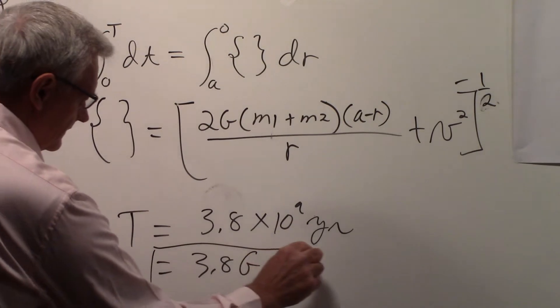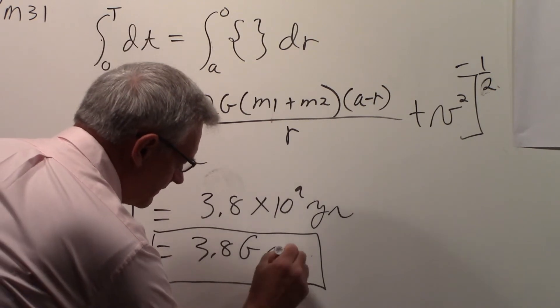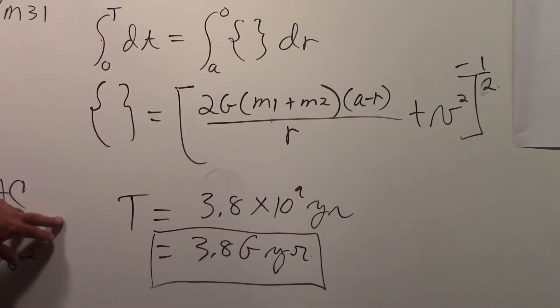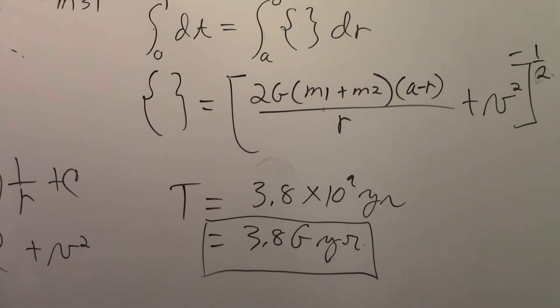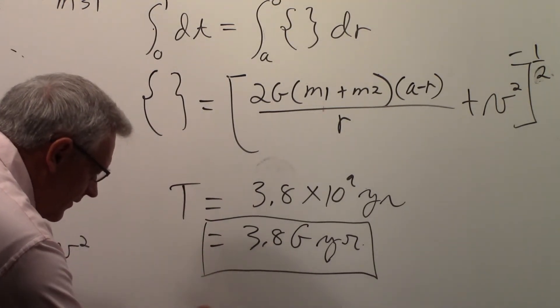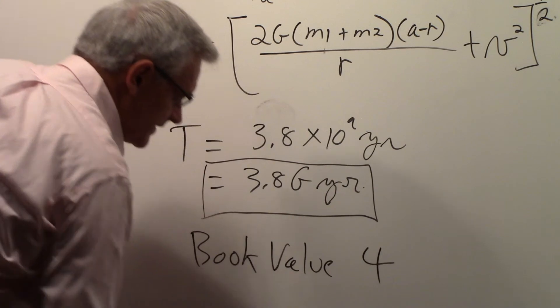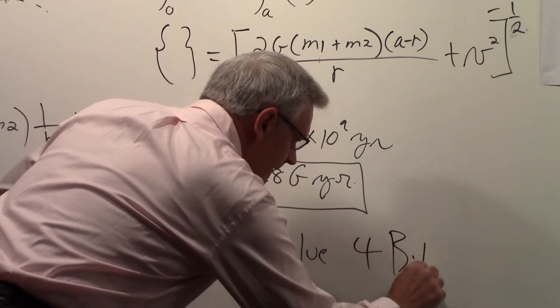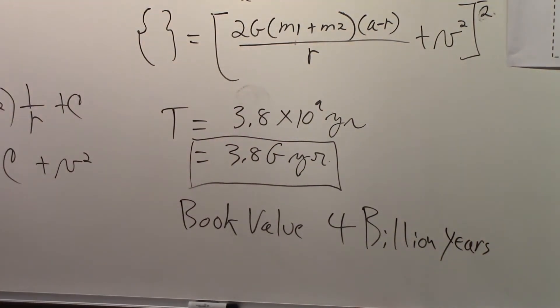This value here is very close to what you'll find other people using as the time of the collision. It's actually closer to 3.75, but since we don't really know the masses that well or even the distance, 3.8 is a good estimate. So what you might want to call the book value, what people usually say is 4 billion years. You can see this calculation gave us a result very close to what it actually is.